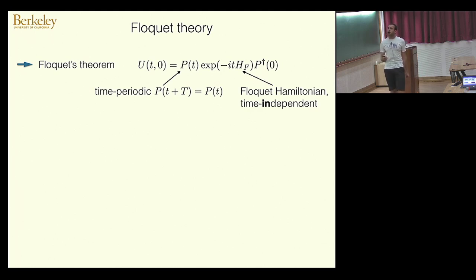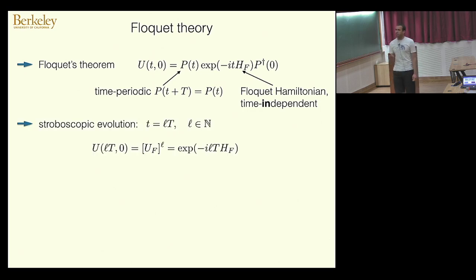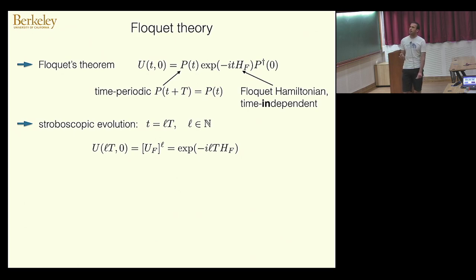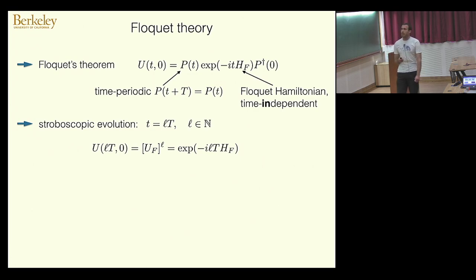The cornerstone of Floquet theory is Floquet's theorem, which postulates that the time evolution operator factorizes into two unitaries: a micromotion operator P, which is periodic with the same period as the Hamiltonian, and a time-independent static Floquet Hamiltonian. If you look at the system stroboscopically — at integer multiples of the driving period — the Floquet unitary is essentially just e^{-itH_F}, similar to static systems, except we don't really know what the Floquet Hamiltonian is.